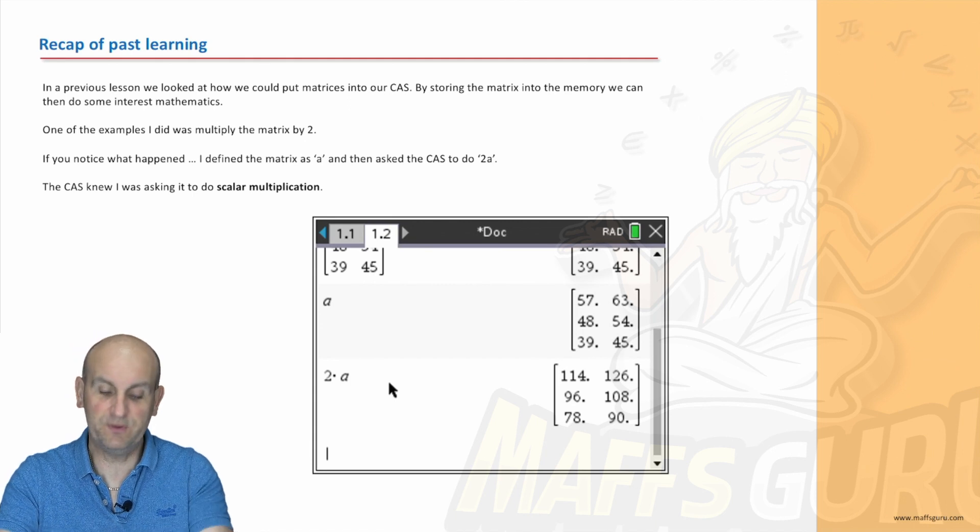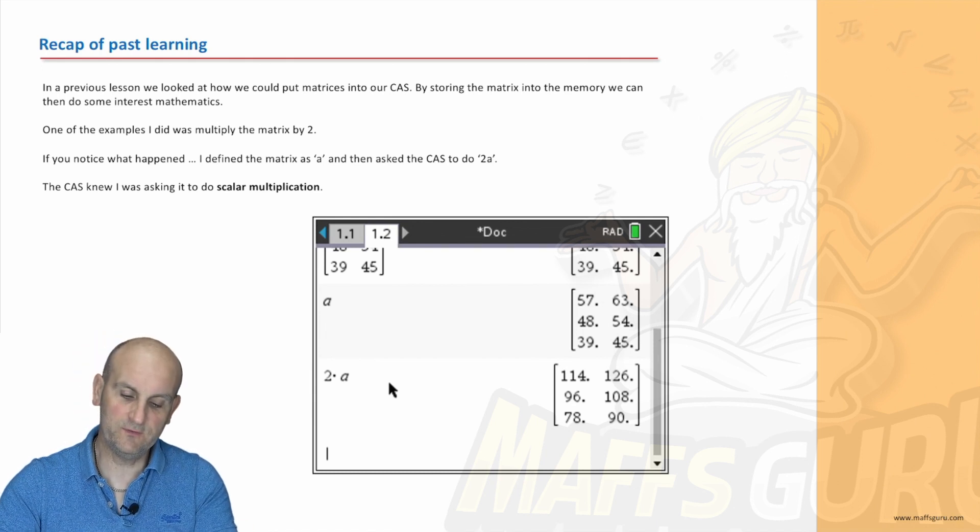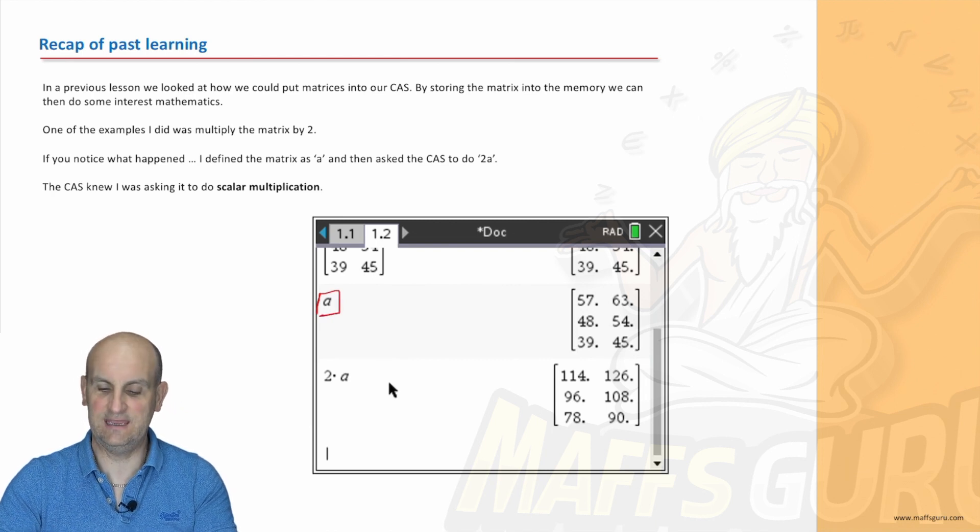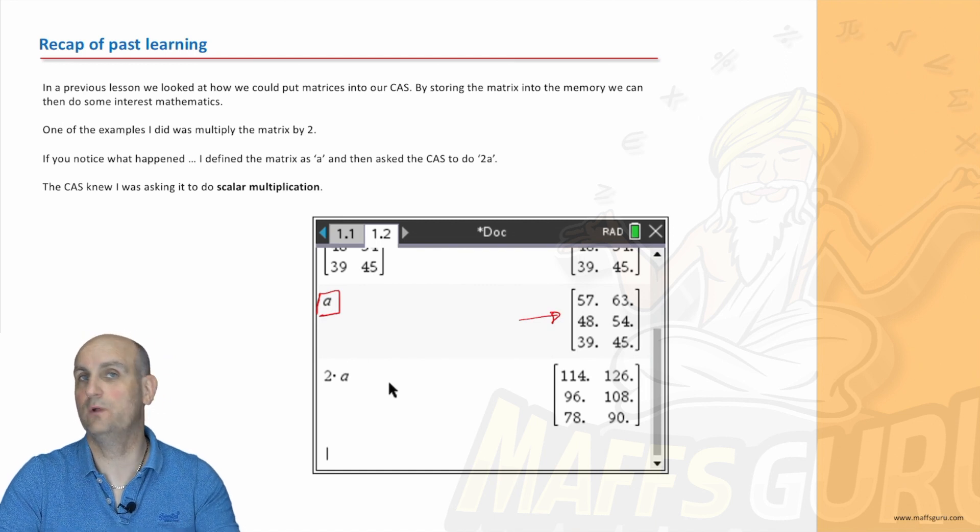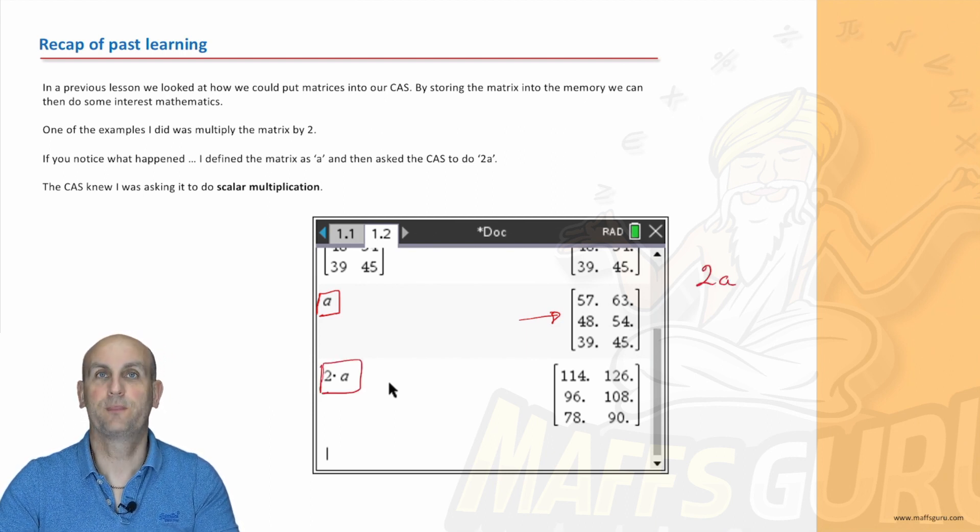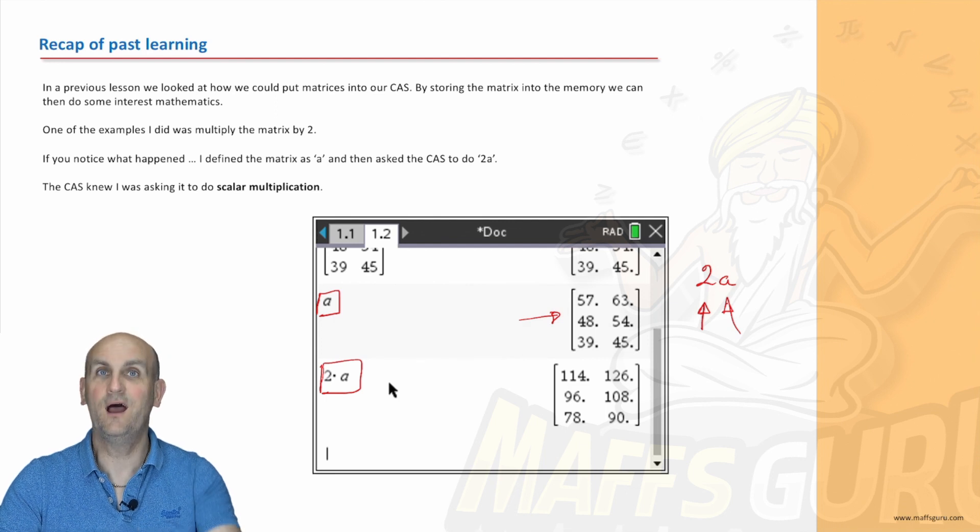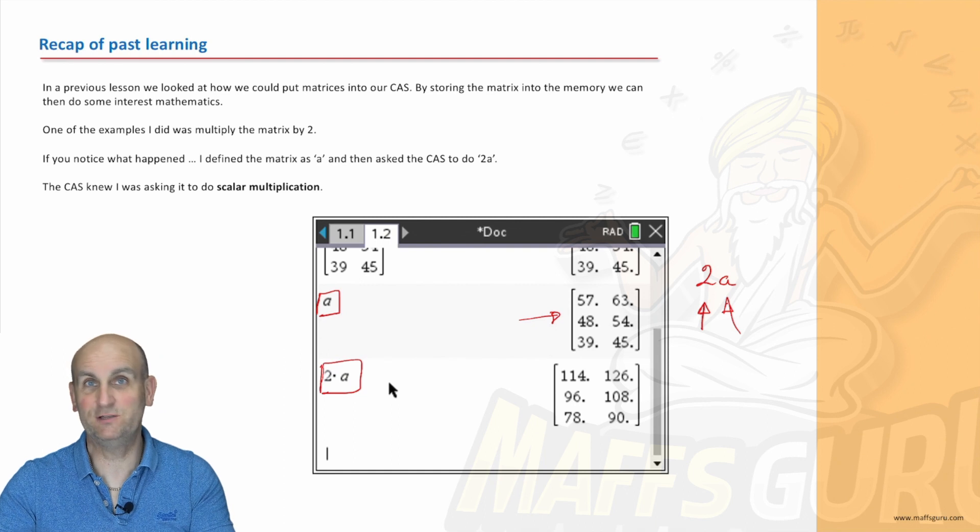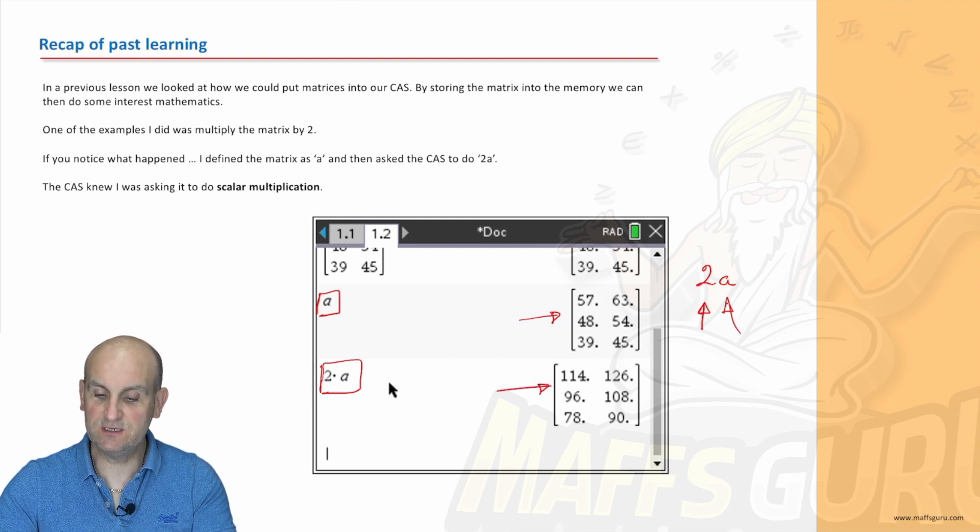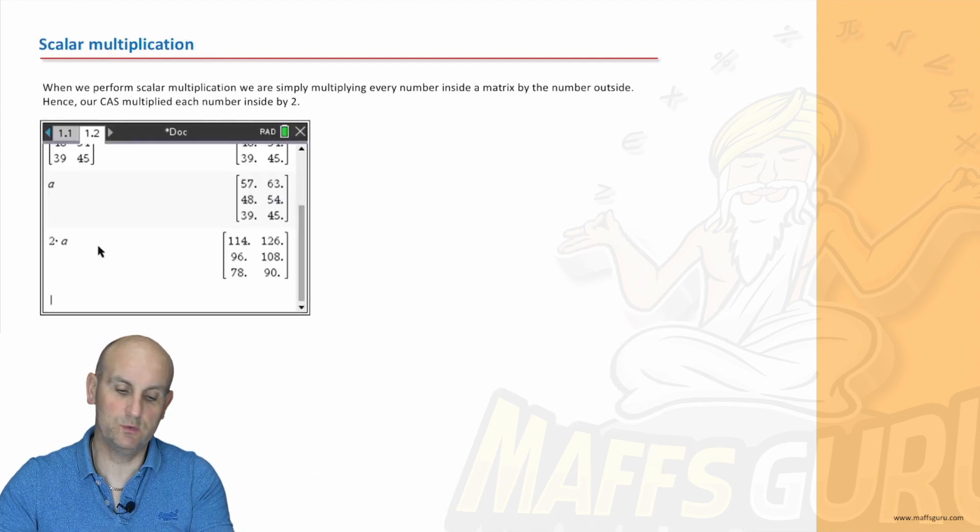In a previous video we looked at the idea that we could use our CAS to define or store a variable. What I've done in a previous stage is I said well I'm going to let A equal this matrix here. And then at the end of the video I said okay what if we wanted to double all of the values inside that matrix? Well I could tell the calculator to do it just by doing 2A. Well ladies and gentlemen guess what that number 2 is? That number 2 there is what we call a scalar. And when we multiply a matrix by a scalar it multiplies every single element by that number. And what you notice there is yes every single number, the 57 doubled, 63 doubled, 48 doubled. And that's why we use our CAS calculator. It makes life so much easier.